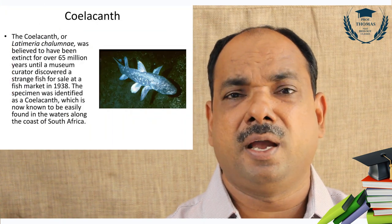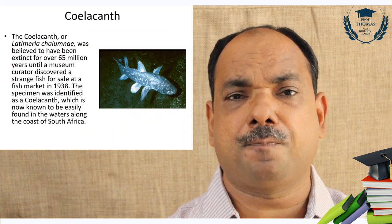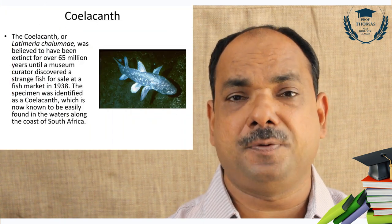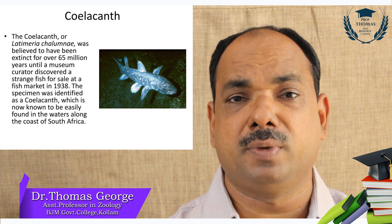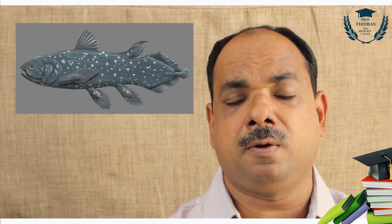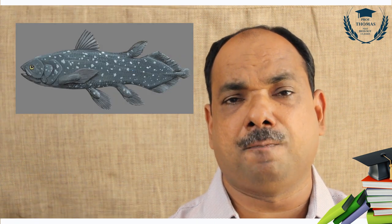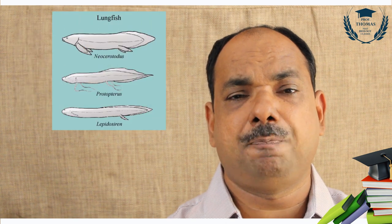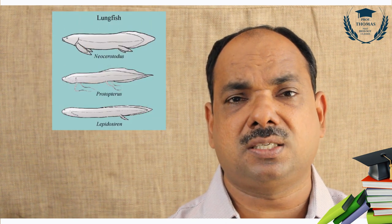Scales are cycloid, ctenoid, ganoid, or cosmoid. Latimeria chalumnae, or the lobe-finned fish, is a connecting link between fish and amphibia. In 1938, a fish was caught from the Comoros — this fish is called Latimeria chalumnae. It is a connecting link between fish and amphibians.